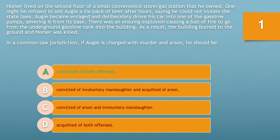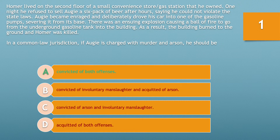If you chose option A, convicted of both offenses, you were correct. Under the common law, murder is the intentional killing of a person with malice aforethought. Malice aforethought requires that the killing be committed with one of the following states of mind: 1. Intent to kill. 2. Intent to commit great bodily injury. 3. Wanton and willful disregard for human life. 4. Intent to commit a felony.